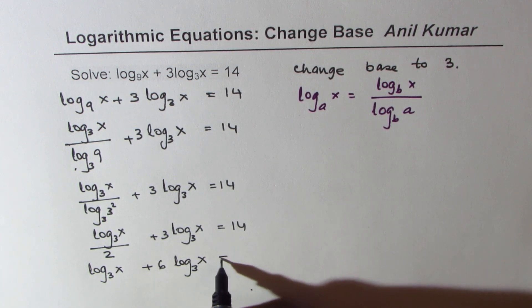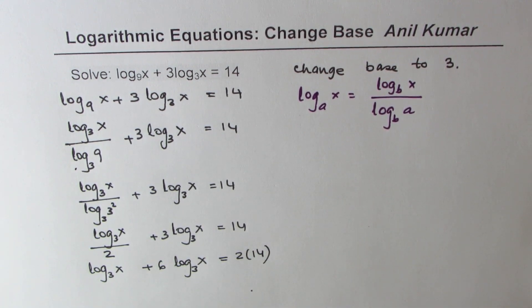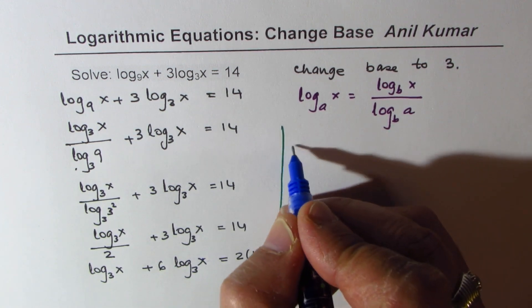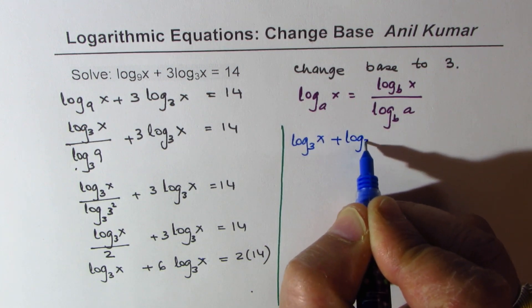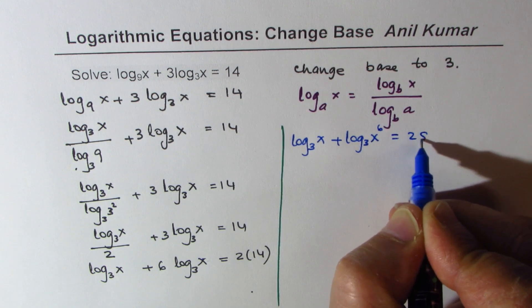Now we can apply the logarithmic rules—that means product and exponent also. Let's rewrite this as log base 3 of x plus log base 3 of x to the power of 6 equals 28.